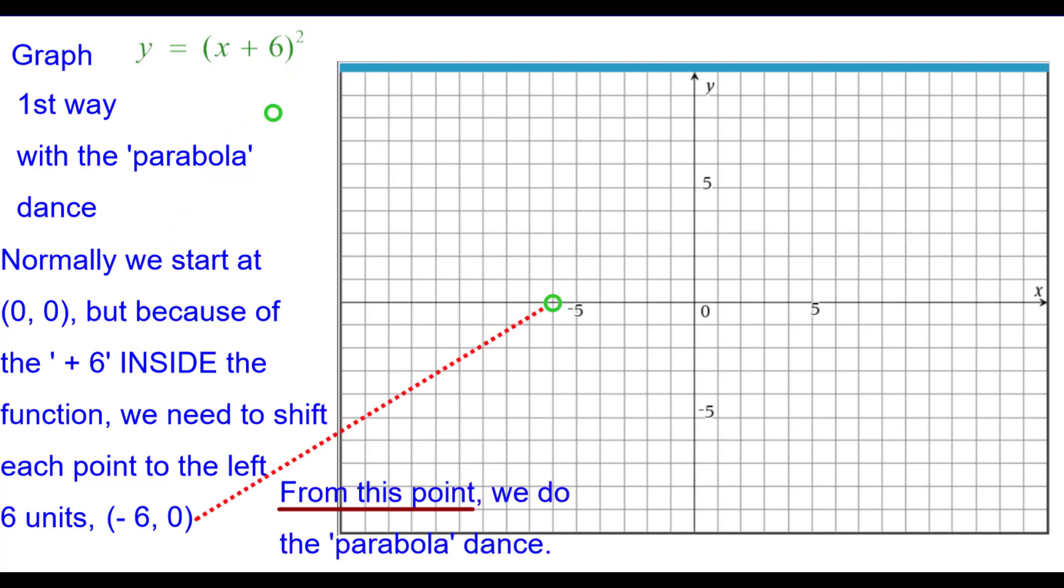And it's from this point that we'll do the parabola dance, which is right 1 up 1 because 1 squared is 1. Right 2 up 4, 2 squared is 4. 3 squared is 9.